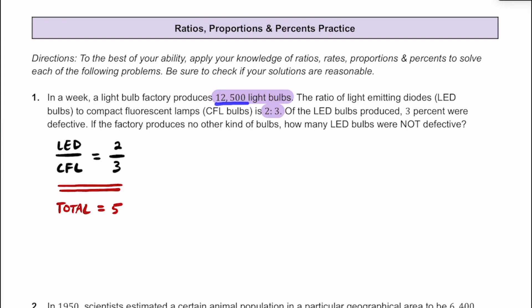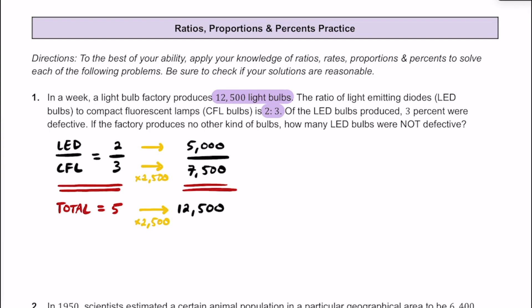We know they're producing a total of 12,500 light bulbs, and that's going to be related to the total number of light bulbs here. If we have a total of 12,500 light bulbs, that means that is going to be 2,500 more than 5. So if we're going to keep the same ratio, we should multiply both the LED and CFL light bulbs by that same value, 2,500. We would have a total of 5,000 LED light bulbs for every 7,500 CFL light bulbs, and you can see that the total adds up to 12,500.